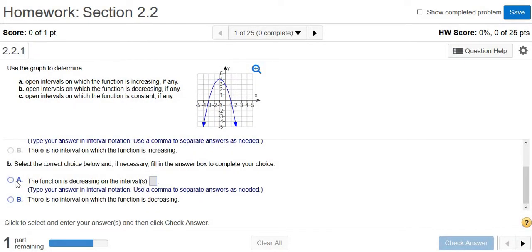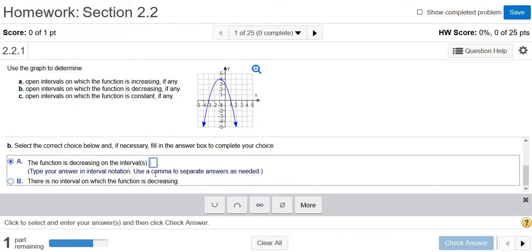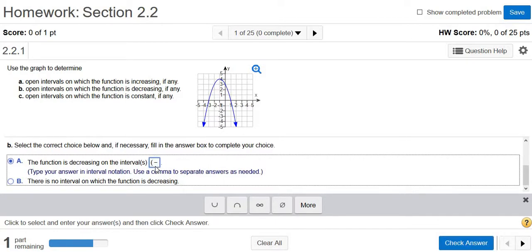So I'm going to close this. It's always parentheses for increasing, decreasing. So negative 1 to infinity, and then parentheses.